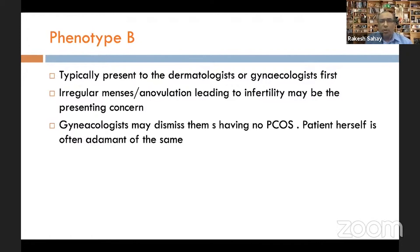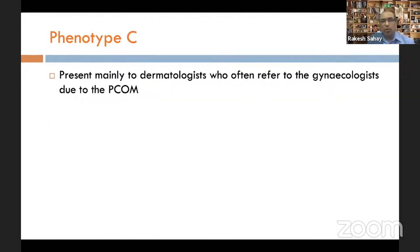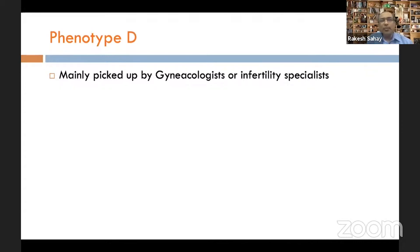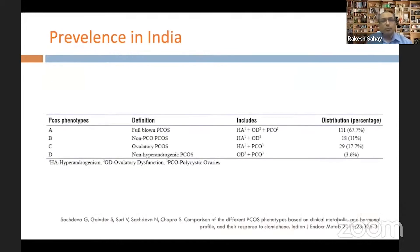With phenotype B, the gynecologist may dismiss the patient as not having PCOS because PCO morphology is absent, even though the patient is often convinced of the diagnosis. Phenotype C presents mainly to the dermatologist, who may refer them to a gynecologist. Phenotype D is mainly picked up by gynecologists or fertility specialists because these patients lack hyperandrogenism and typically present with fertility issues.